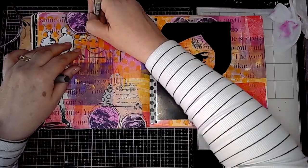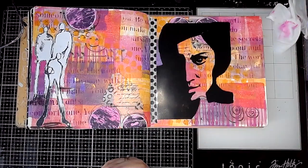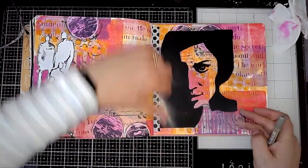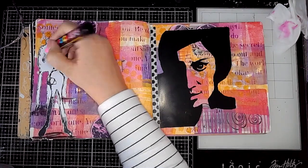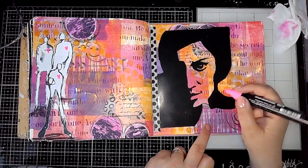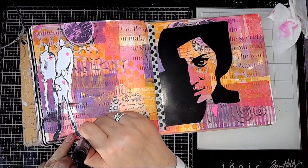Then I'm just outlining them, just some scribbly lines. And then I just do a little bit of mark making on the page using the Posca pens.